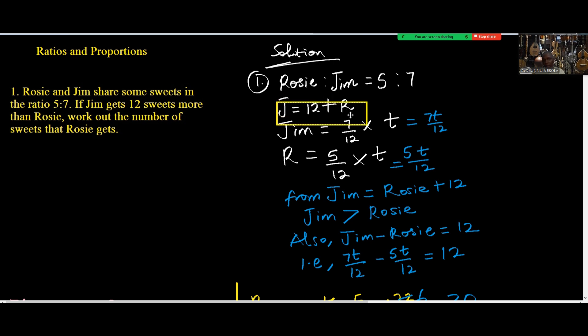Jim from the ratio is 7 out of the total of 12, so 7 over 12 times the total sweets gives us 7t over 12. Rosie, the ratio of Rosie is 5, so 5 over 12 times total gives us 5t over 12.